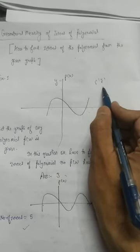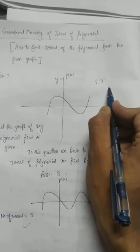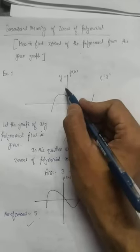If the polynomial were given in y, we would see how many times the given graph intersects the y-axis.